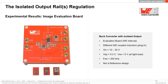Now we will see experimental results regarding isolated output regulation. The evaluation board used accepts an input voltage range from 10 to 32 V and provides a regulated primary-side output (buck converter output) of 5.3 V. The switching frequency is set at 300 kHz, and plug-in coupled inductor boards are used to easily change the magnetic component and check performance.